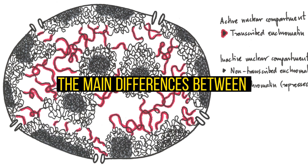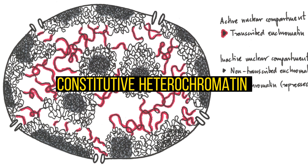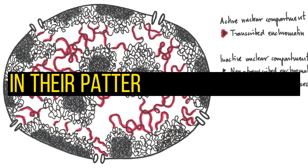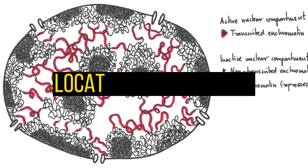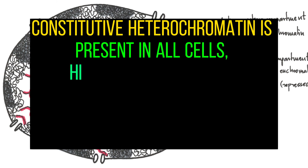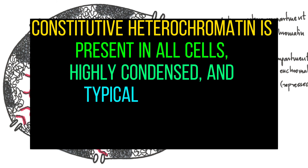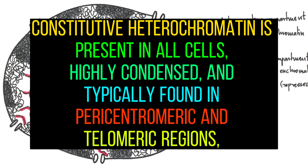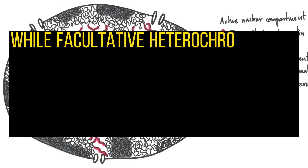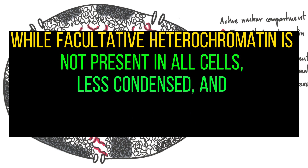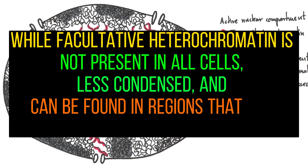The main differences between constitutive and facultative heterochromatin lie in their patterns of expression, location, and density. Constitutive heterochromatin is present in all cells, highly condensed, and typically found in paracentromeric and telomeric regions, while facultative heterochromatin is not present in all cells, less condensed, and can be found in regions that are typically euchromatic.